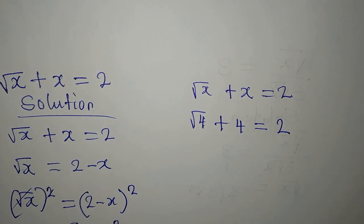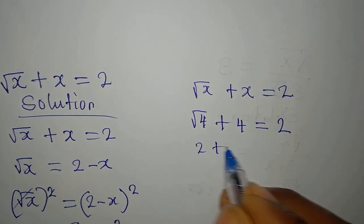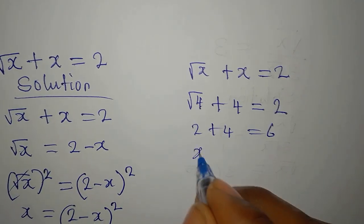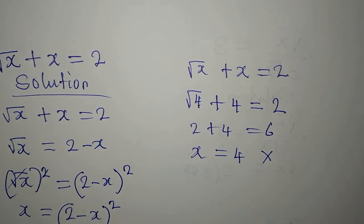And this is already more than 2, because this is 2 plus 4, which is 6. So therefore x equals 4 has to be rejected.